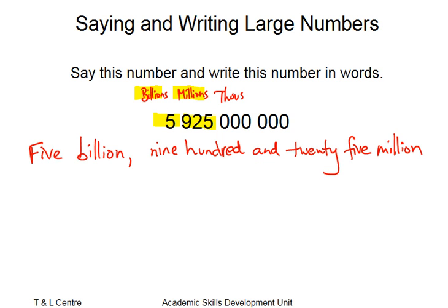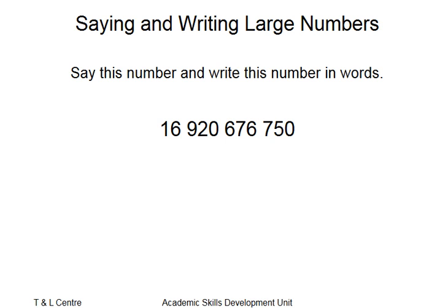Moving to the next example, we have quite a few numbers in this one — it's going to take quite a bit of writing. Remember, the second set of three digits represents thousands, the next set millions, and the next set billions.